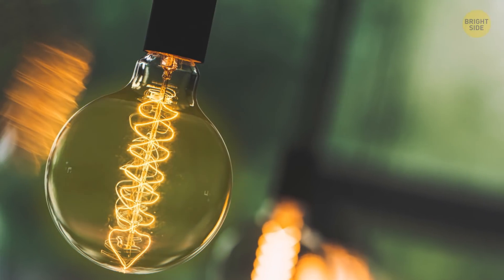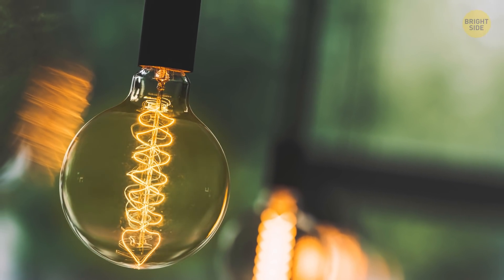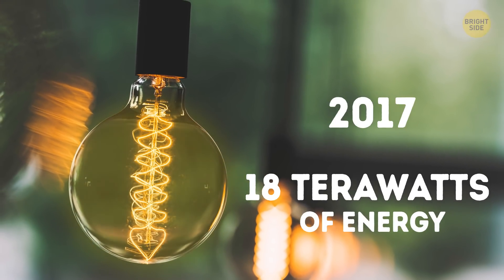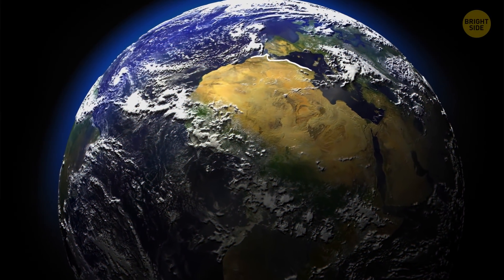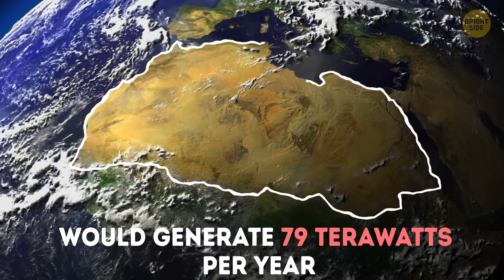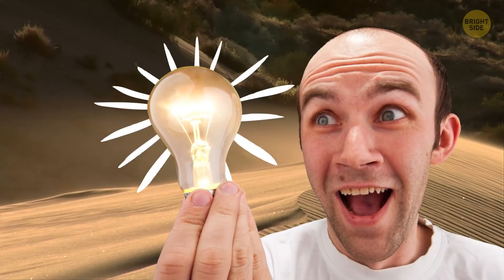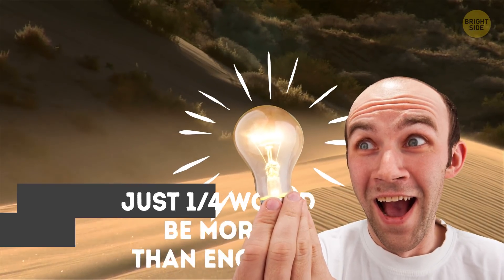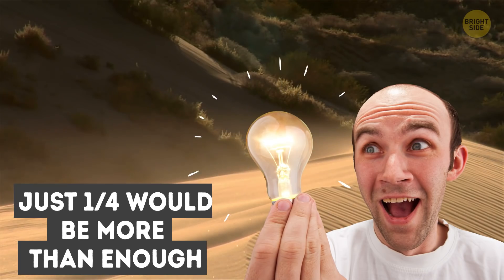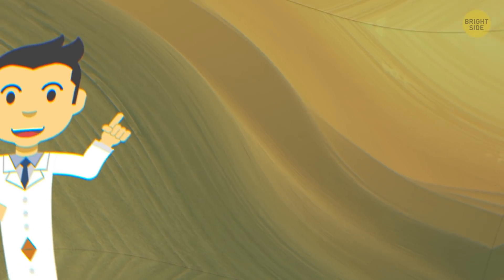Let's break it down. In 2017, people all over the world used about 18 terawatts of energy. The Sahara, if covered completely in solar panels, would generate 79 terawatts per year. That would cover everything we need plus some. Basically, it's not even necessary to install that many solar panels. Just a quarter would be more than enough.